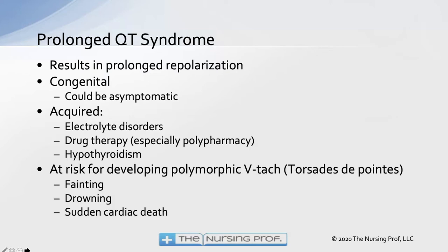In prolonged QT syndrome, we have a prolonged repolarization. There are a couple different phases in repolarization. I'm going to illustrate this process using an analogy — think about using a gun. If you were to fire a gun, that's a fairly easy process: pull the trigger, shoot at the target. The hard part comes in reloading.